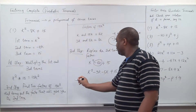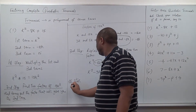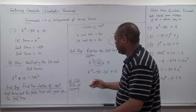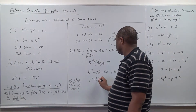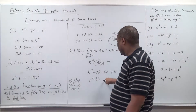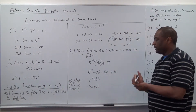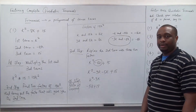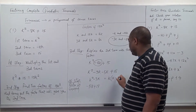Then the fourth step is to factor by grouping. Grouping means you group this in twos. We can factor out from the first pair and also factor out from the second pair. If we factor the first pair, k will come out and this will be k minus 3.